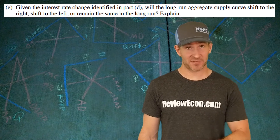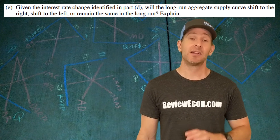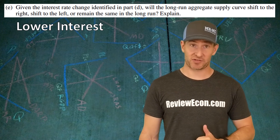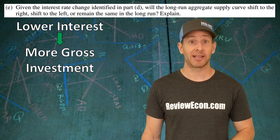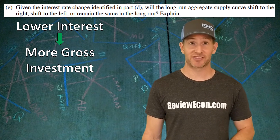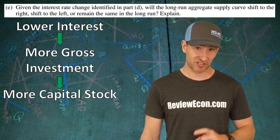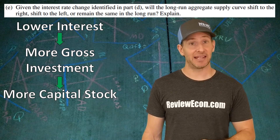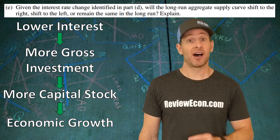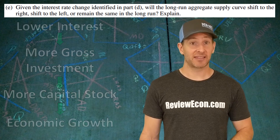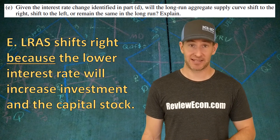For the last part of this question, we have to explain what will happen to the long-run aggregate supply curve as a result of the lower interest rate. Lower interest rates mean there will be an increase in the quantity of gross investment. Gross investment is primarily purchases of physical capital. That increase in purchases of physical capital means an increase in the capital stock within the economy. More physical capital means more growth, illustrated as a rightward shift of the long-run aggregate supply curve. Say that the LRAS shifts to the right because the lower interest rate will increase investment and the capital stock.